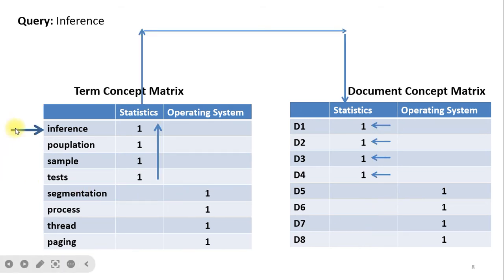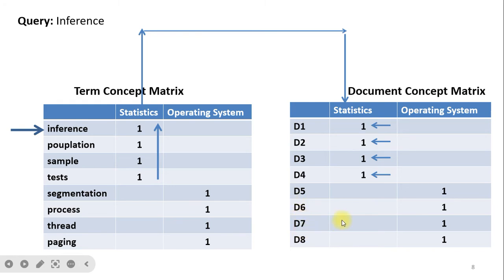For example, when the user gives the query 'inference', it is mapped to a concept. Two concepts exist: statistics and operating system. The term-concept matrix maps the keyword 'inference' to the concept of statistics. So documents D1, D2, D3, D4 get retrieved. When the keyword 'thread' is given, it maps to the operating system concept and documents D4, D5, D6, D7 get retrieved. This demonstrates concept-based retrieval.